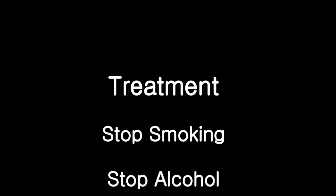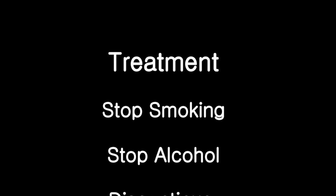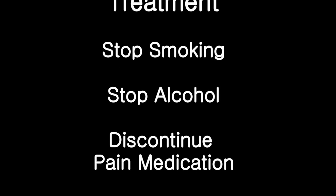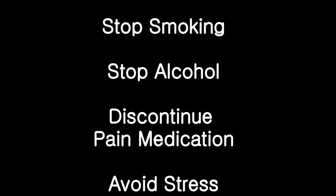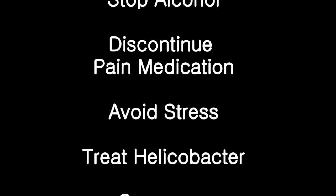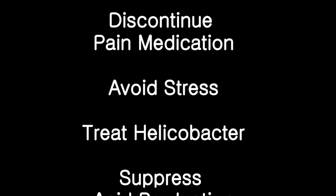To treat a duodenal ulcer, it is important to eliminate factors responsible for the development of the disease. It is therefore advisable to stop smoking and drinking, discontinue aspirin or other pain medications, and avoid stress. If detected, Helicobacter pylori needs to be treated with antibiotics.